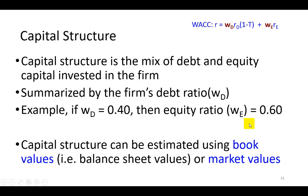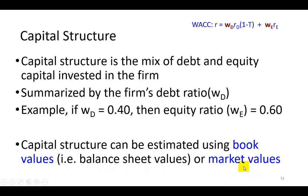How do we go about determining the debt ratio so as to calculate the weighted average cost of capital? There are two ways to go about this: one is to use book values, which are basically balance sheet values, and the other is to use market value weights.